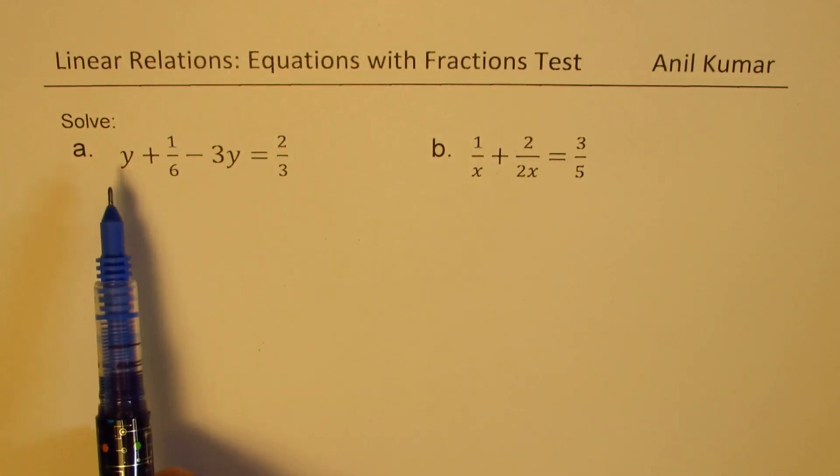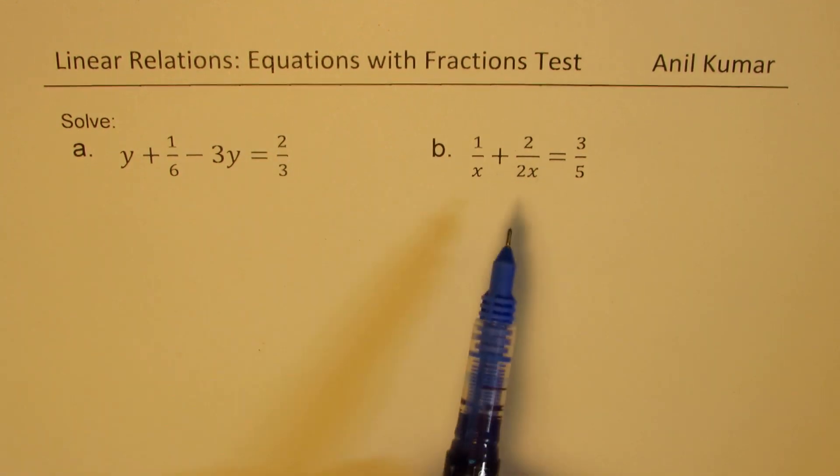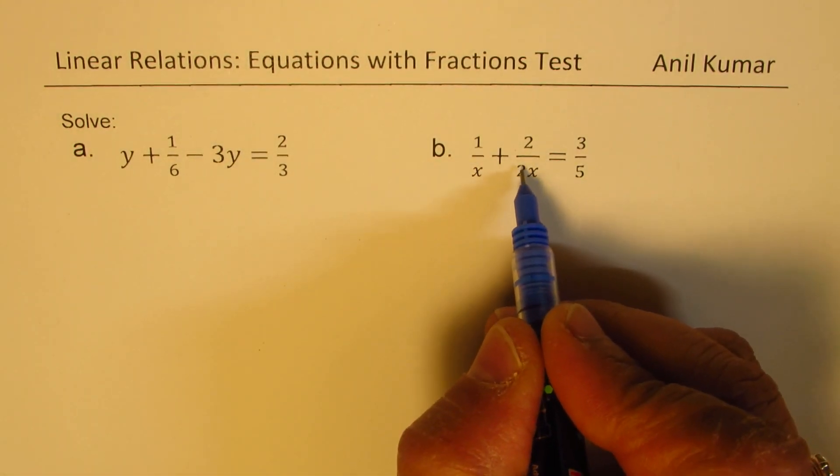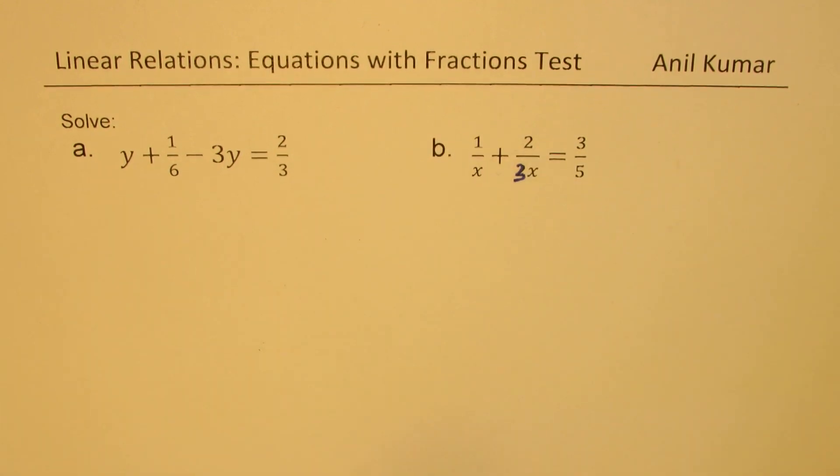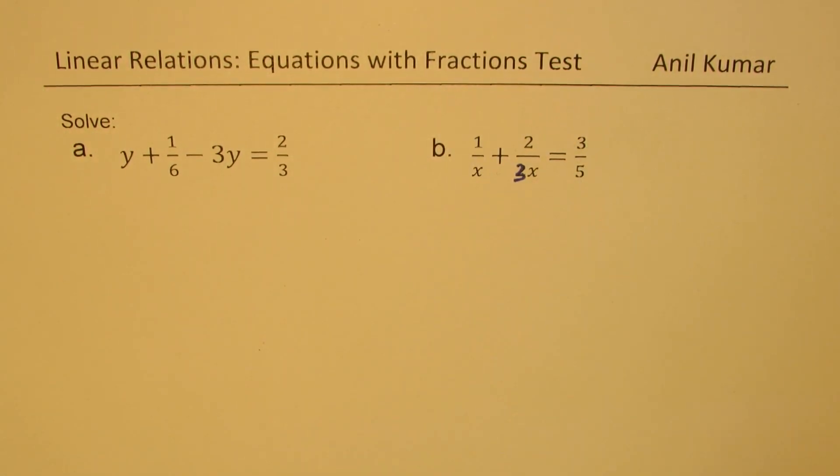We need to solve these two equations. The first one is y plus 1 over 6 minus 3y equals 2 over 3. And then we have 1 over x plus 2 over 3x. Let me make it 3x, otherwise we can just cancel. So 1 over x plus 2 over 3x equals 3 over 5. We need to solve these two equations.